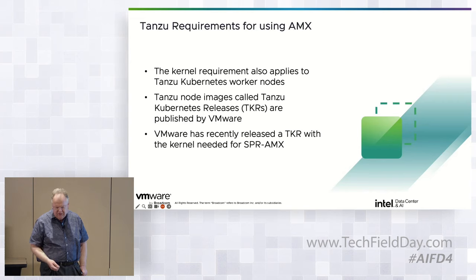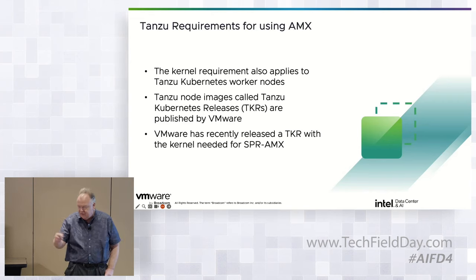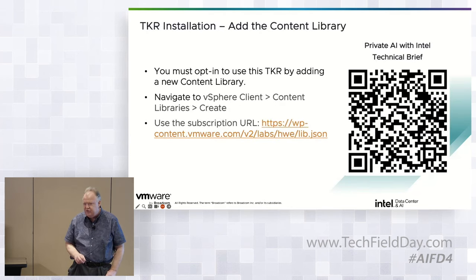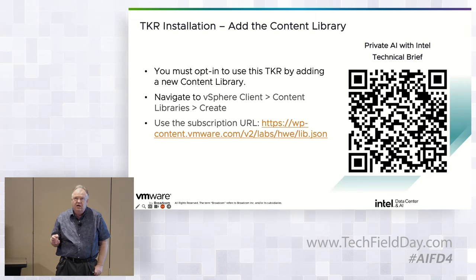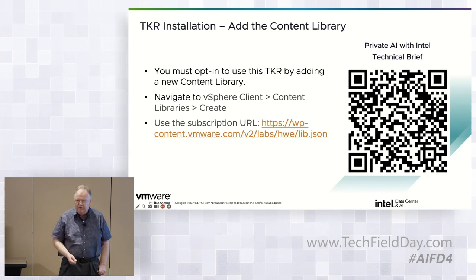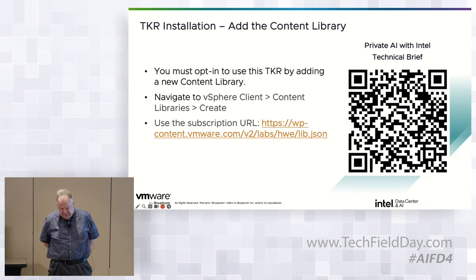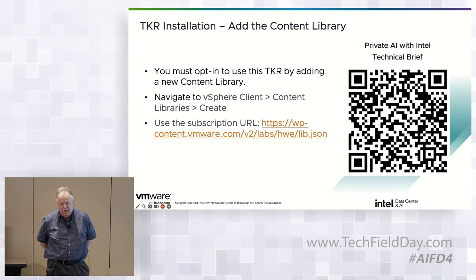VMware has released a TKR with the kernel needed for SPR AMX, and it gets a little complicated. Tanzu typically deploys only with an LTS (long-term support) kernel because we want it to be very stable. Tanzu produces TKRs on either Photon OS or Ubuntu. Ubuntu 22.04 ships with a 5.15 kernel, so Ubuntu 22.04 with the LTS kernel out of the box cannot support AMX.